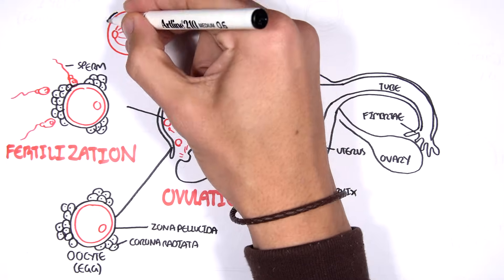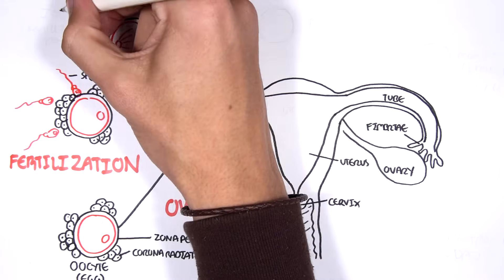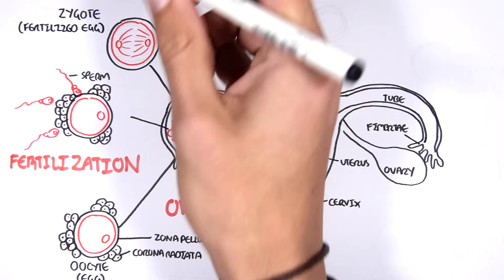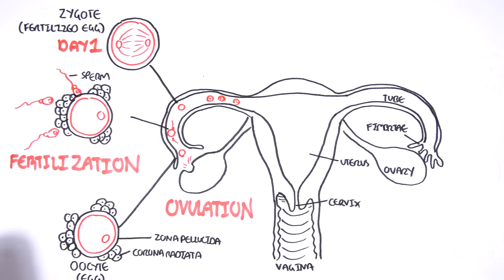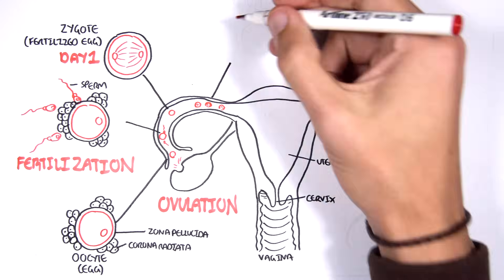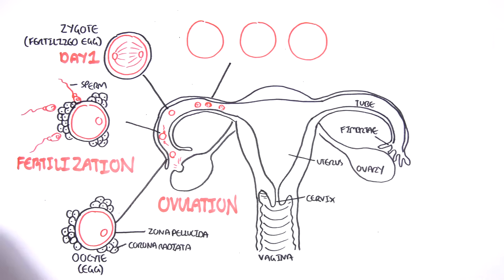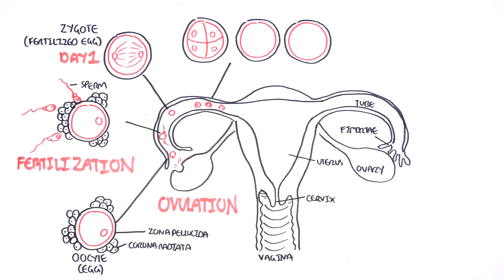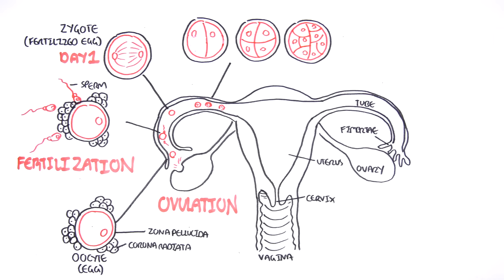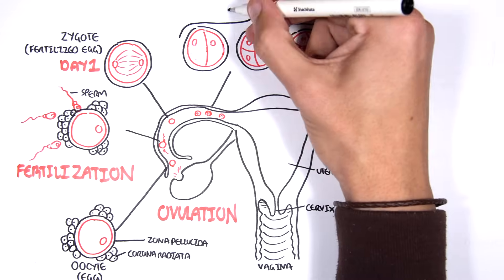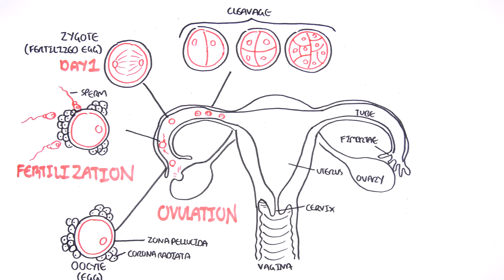Once fertilization occurs, a zygote is formed. A zygote is a fertilized egg, and this is day one. The sperm's DNA and the oocyte's DNA mix to form one cell. That one cell then divides into two cells, then four, then eight, then 16. This whole process, which occurs along the fallopian or uterine tube, is known as cleavage.